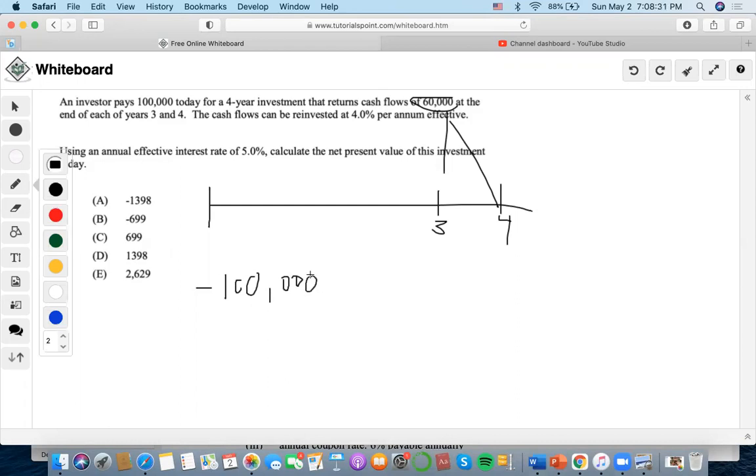So in this case, what we can do here is that we can see that cash flows can be reinvested at 4%, right? Instead of just discounting $60,000 V to the three back and then $60,000 V to the four back, what we can do is reinvest the $60,000 at time three, so we can combine both cash flows occurring here.